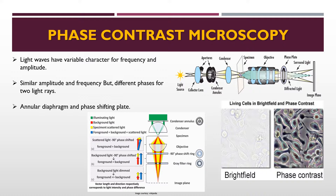An annular aperture in the diaphragm placed in the focal plane of the sub-stage condenser controls the illumination of the objective. The image of the aperture is formed at the rear focal plane of the objective, where there is a phase-shifting element called the phase plate. The phase plate has an annular ring with a phase-altering pattern that increases the wavelength of light passing through it. Rays not deviated by the object pass through the phase-altering pattern and acquire a longer wavelength, while rays deviated by object structures due to different refractive index pass through parts of the phase plate not covered by the pattern, leaving their wavelength unchanged. This difference in phase provides contrast for clear visibility.